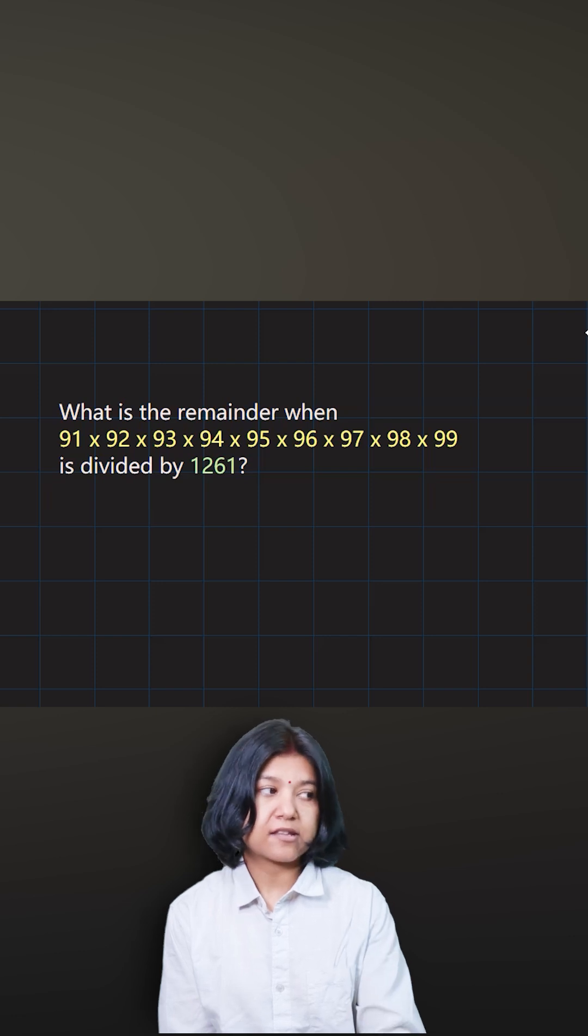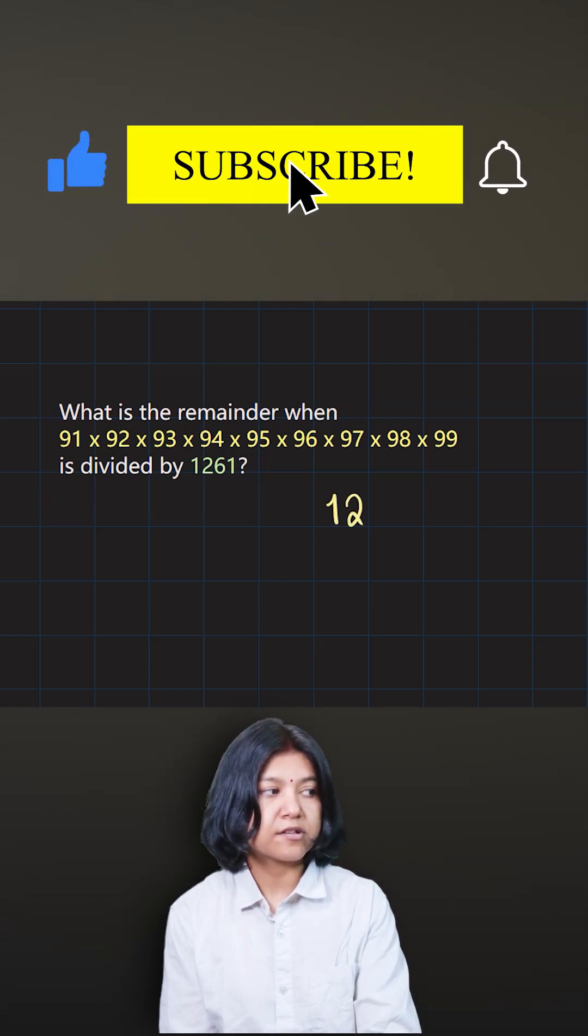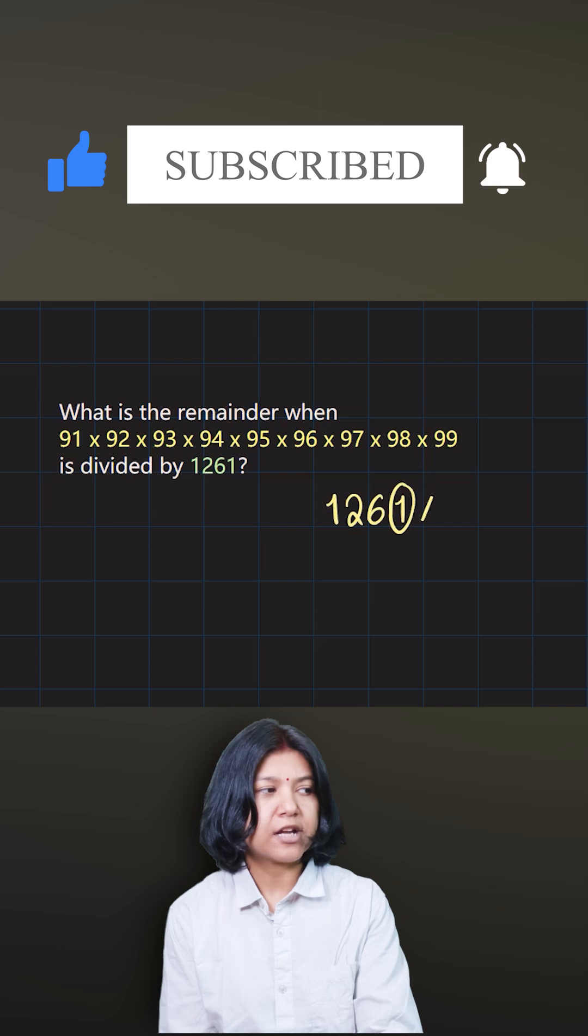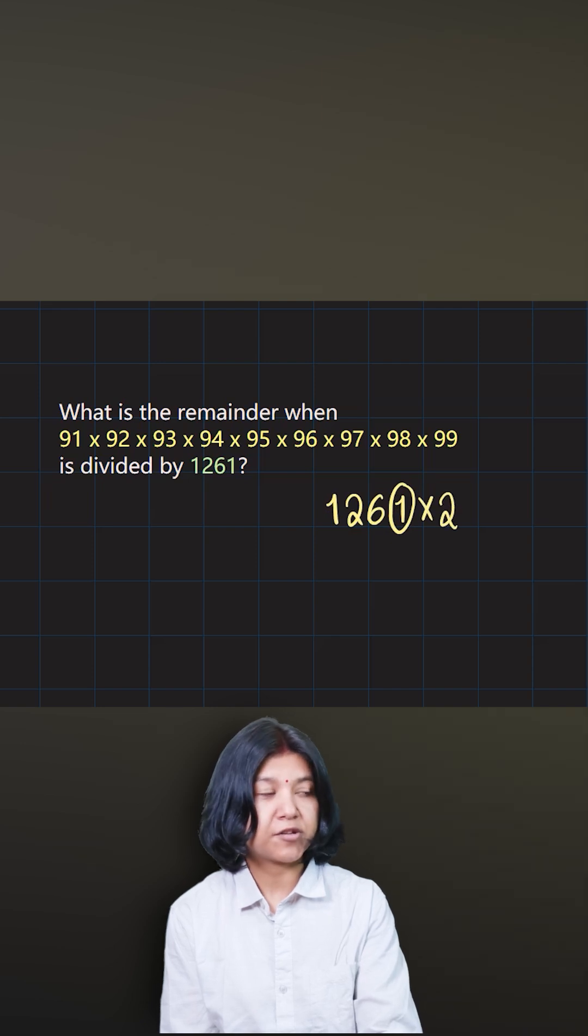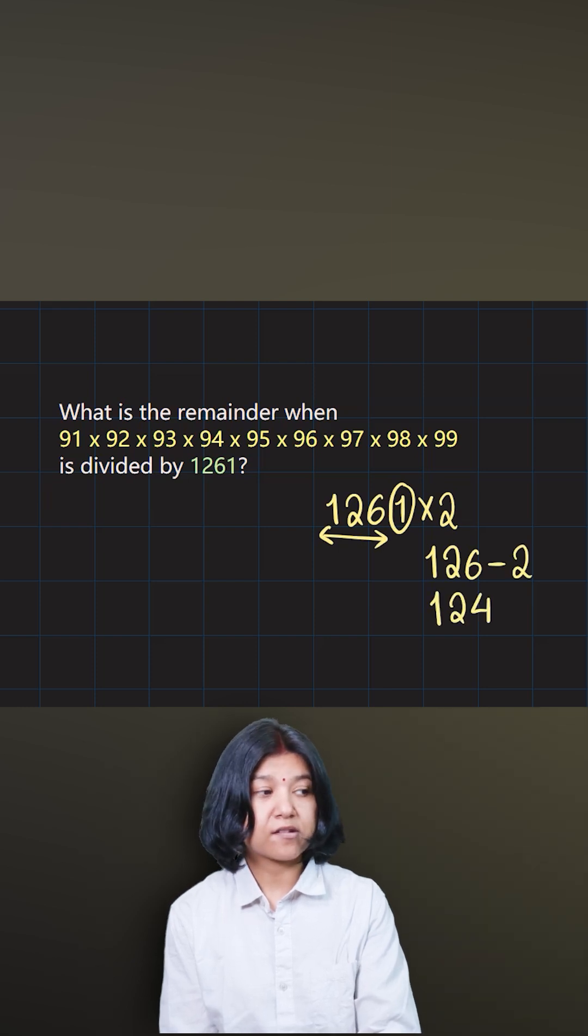7 does not divide this number either because to check for 7 what we do is we take the last digit 1, we double it and then subtract it from the remaining digits I have. So 126 minus the double of 1 is 2. So 124. Again you can follow the same process.